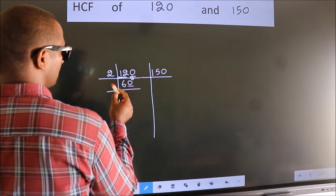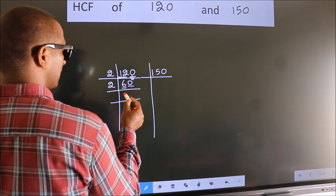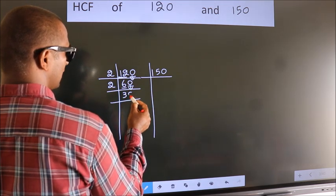Last digit 0, so take 2. First number 6, when do we get 6 in 2 table? 2, 3, 6. This 0 as it is down.